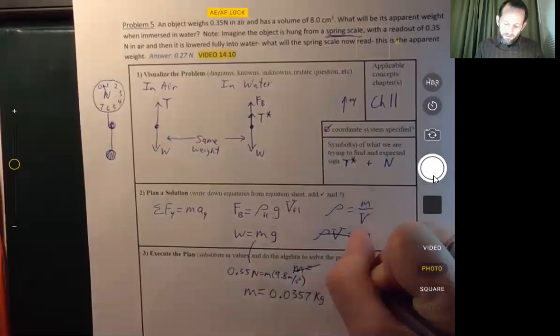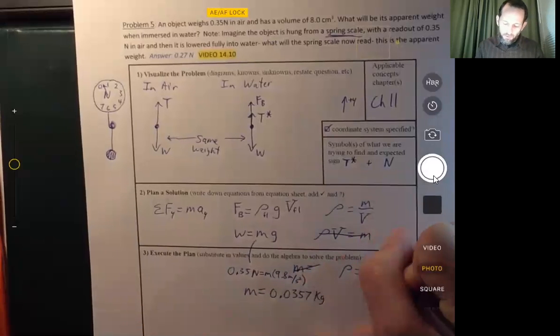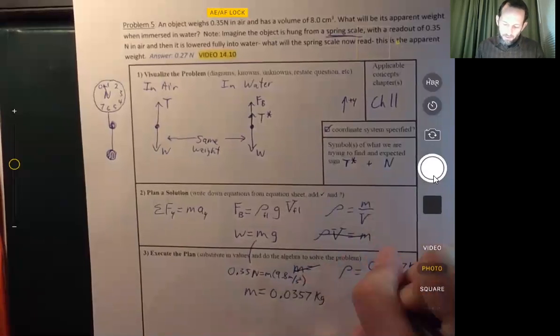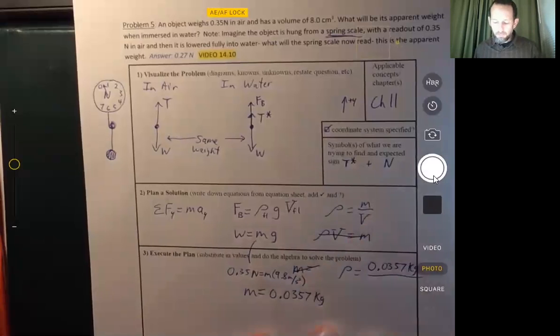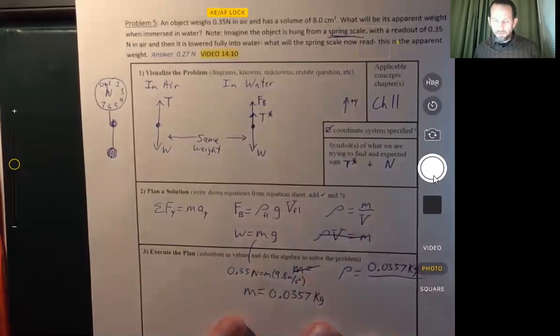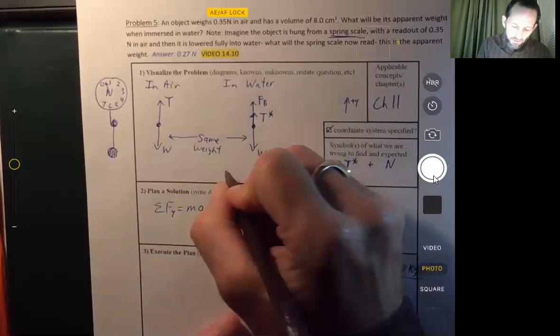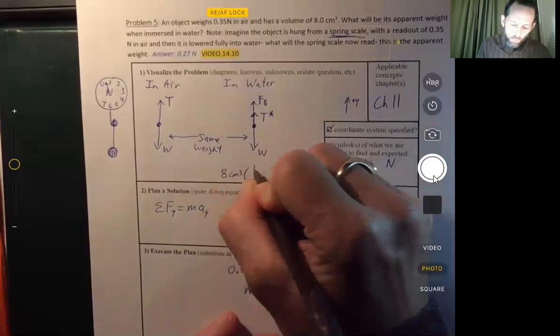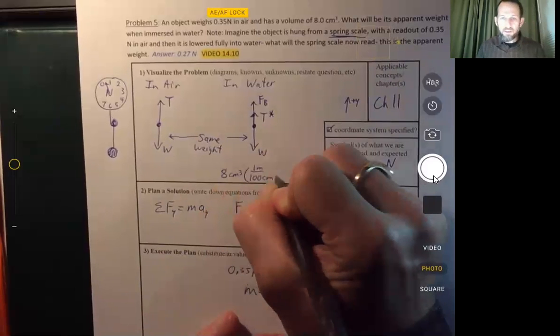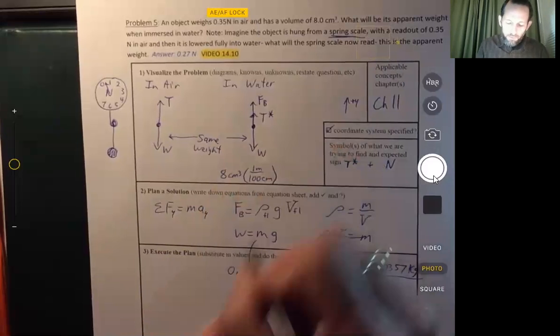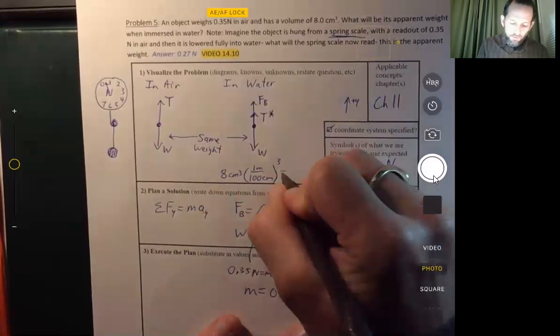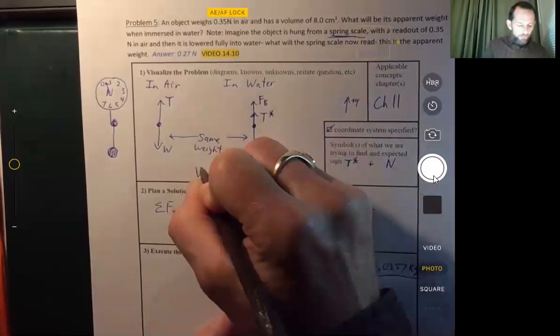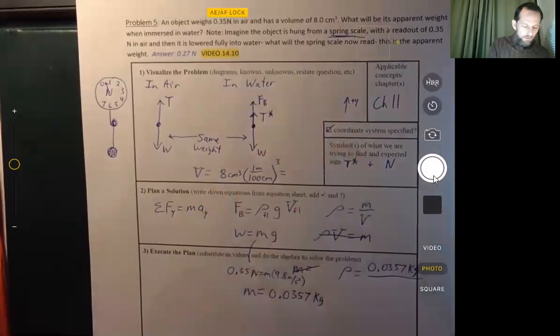And so we're going to use that to find the density. 0.0357 kilograms divided by, well, it's 8 cubic centimeters, but we want to do this in SI units. So there's 1 meter for every 100 centimeters, and we cube that whole thing. So this is for the volume. And so 8 divided by 100 cubed.